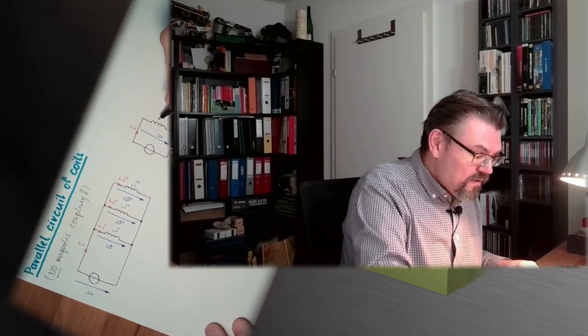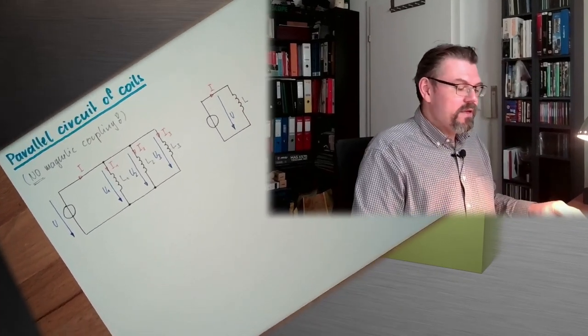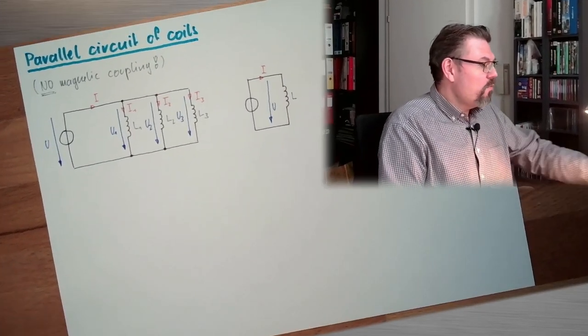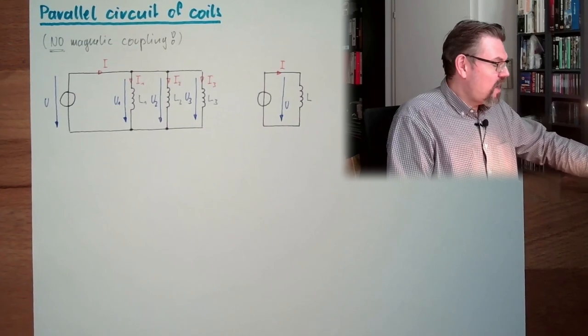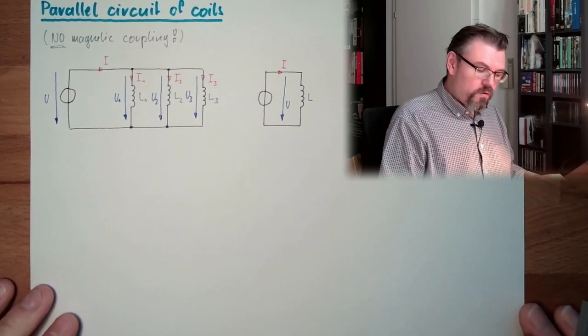We have a parallel circuit of coils and we want to replace them with one replacement L, with one replacement coil. That's how it should look like.